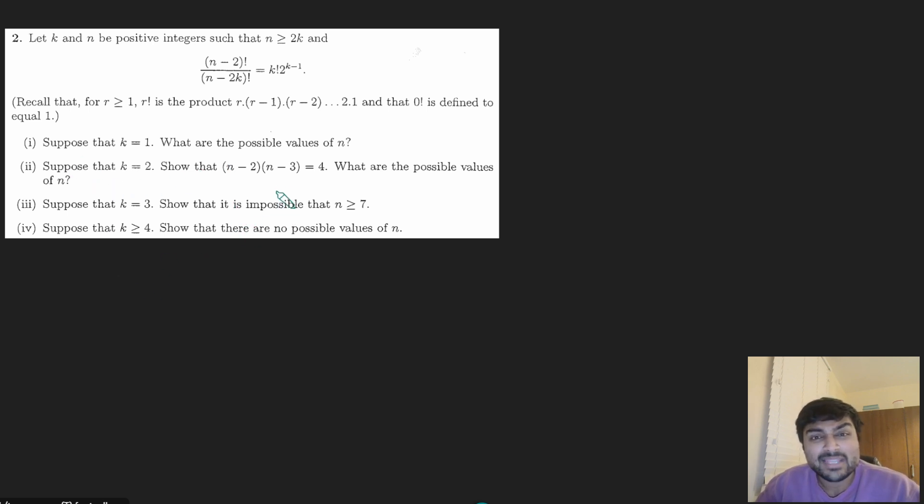Four parts to this. Suppose k is 1, what are the possible values of n? Suppose now k is 2, show that (n - 2)(n - 3) is 4, what are the possible values of n?